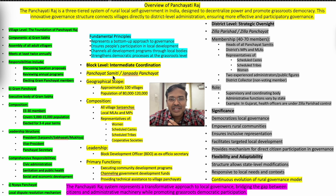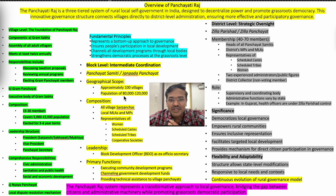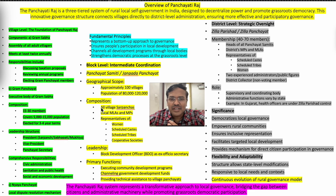The block level is the intermediate coordination body, called Panchayat Samiti or Jan Pata Panchayat. Its geographical scope covers approximately 100 villages and a population of 80,000 to 1,20,000. The composition includes all village sarpanchas from those hundred villages.